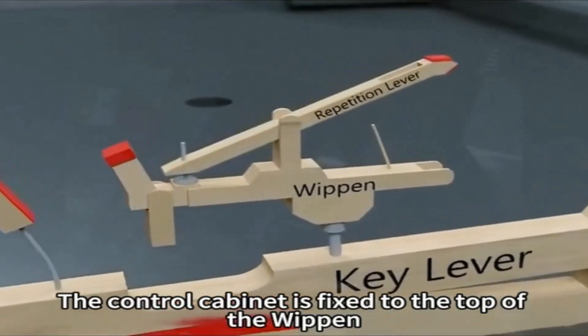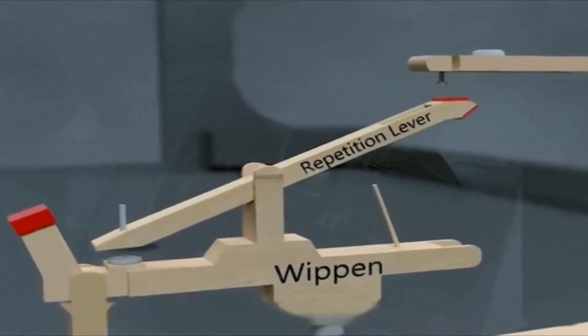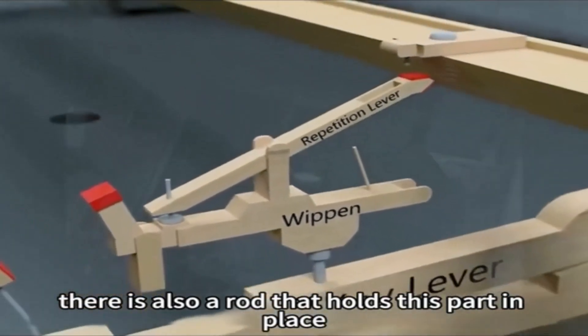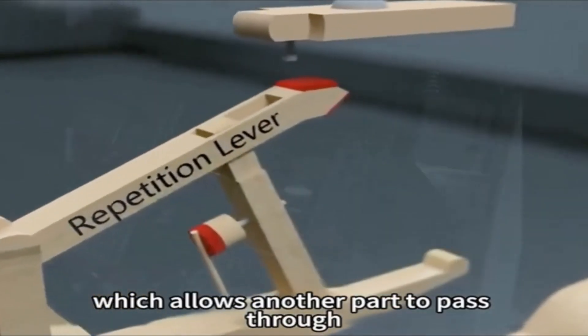The control cabinet is fixed to the top of the whippen, and when working the top will hit this screw to make it rotate slightly. There is also a rod that holds this part in place. Here there is a hole in the control rod which allows another part to pass through.